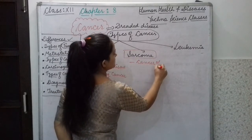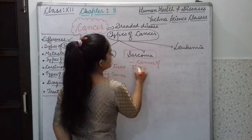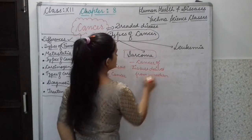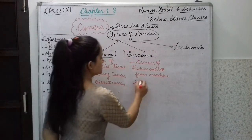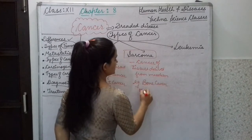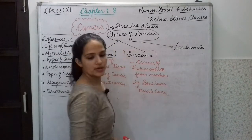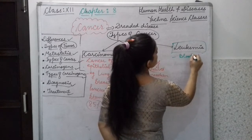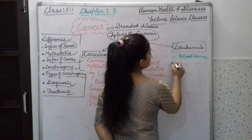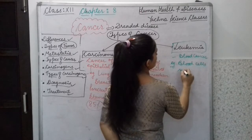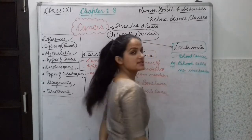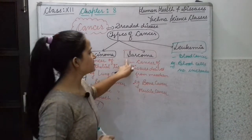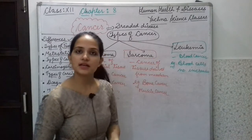The second type is sarcoma — it is the cancer of tissues derived from mesoderm, such as bone cancer and muscle cancer. The third type is leukemia, which is blood cancer. In leukemia, the number of blood cells — like WBCs and RBCs — increases. So the three types of cancer are carcinoma, sarcoma, and leukemia.